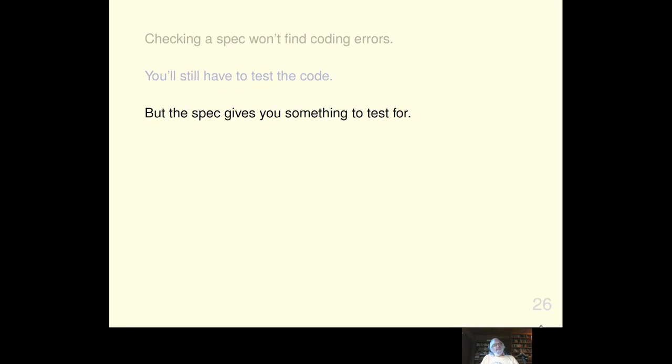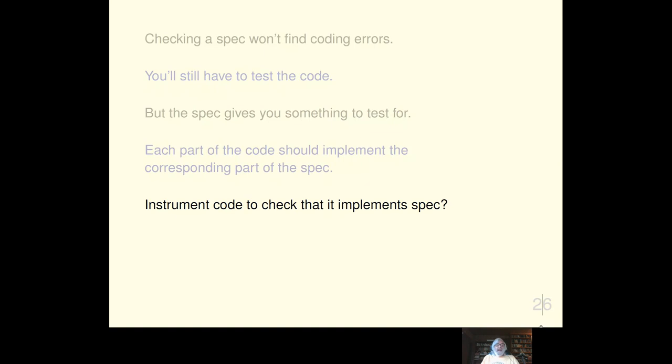One of the early days, and one of the biggest fans of specification in Microsoft were the testers, because the spec told them what the program they were testing was supposed to do. And, in fact, as Marcus indicated, each part of the code implements a corresponding part of the spec. And it's possible to instrument code to check that it actually implements the spec. But, again, that's something I won't talk about.